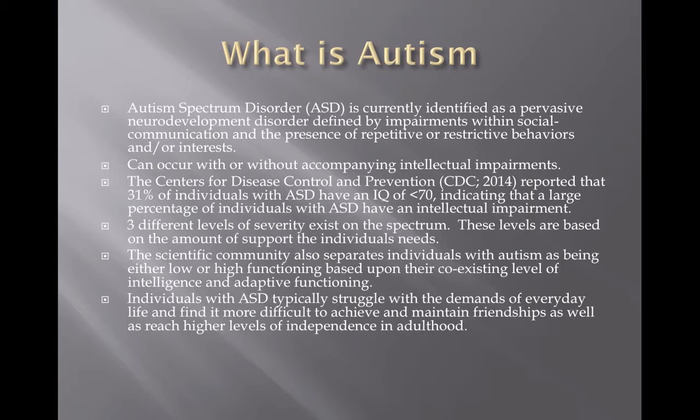However, around 2008, the number of individuals with ASD who also had an IQ below 70 was around 80%. So there has been a large shift towards identifying individuals with ASD who are considered high-functioning.